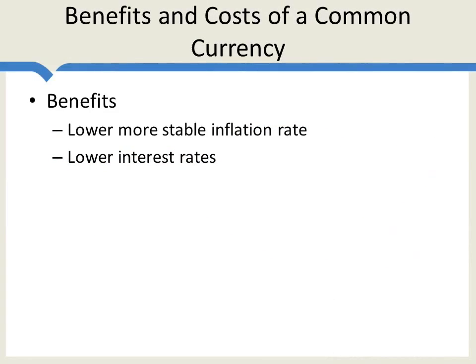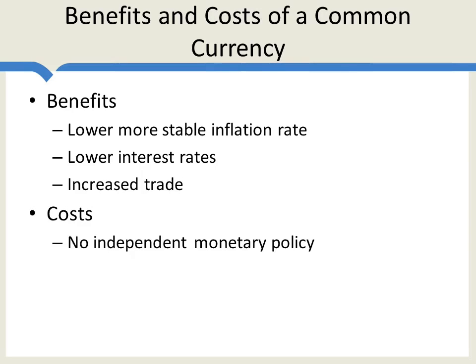So, summing up: the benefits of a single currency are a lower and more stable inflation rate, lower interest rates, and increased trade. The cost is no independent monetary policy, which means a lesser ability to respond to shocks. In the next lecture, we'll apply these ideas and this model to the euro. Thanks.